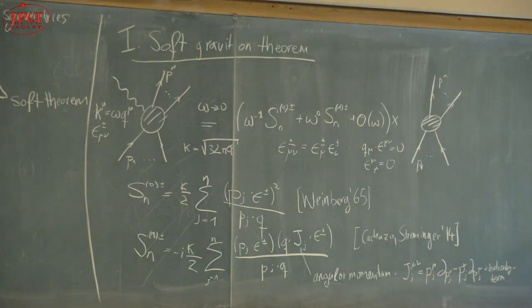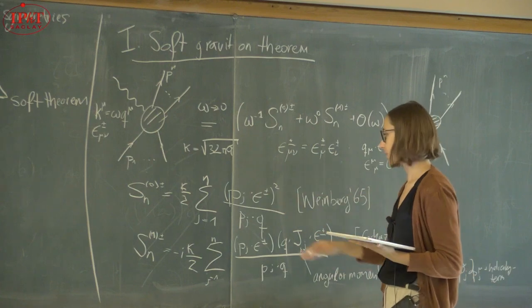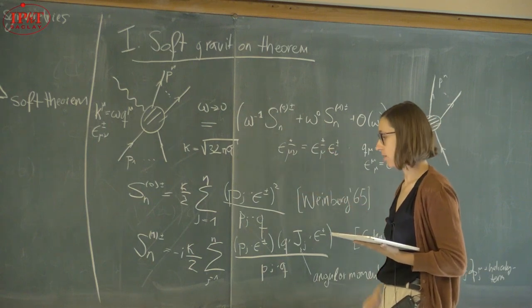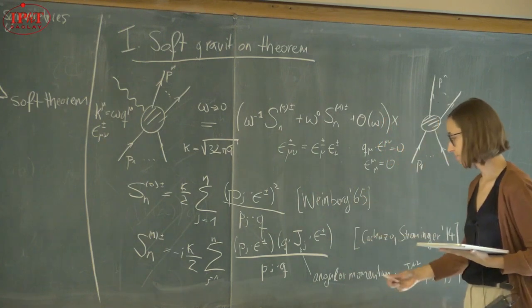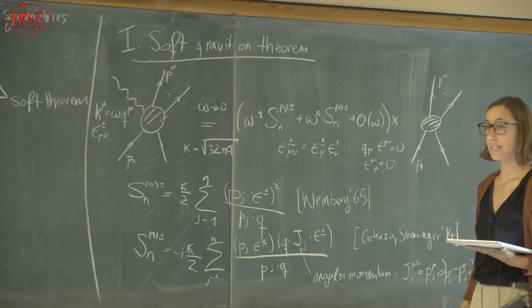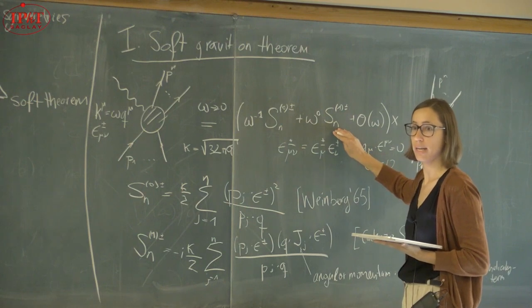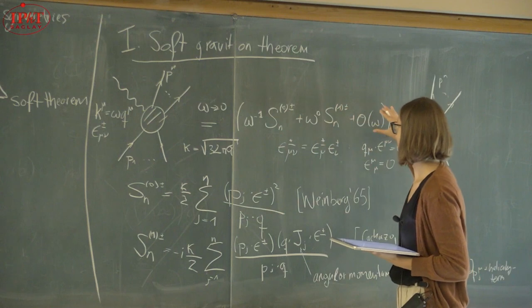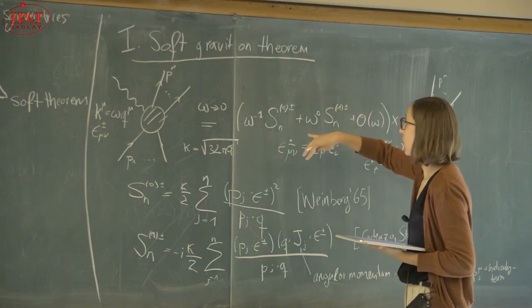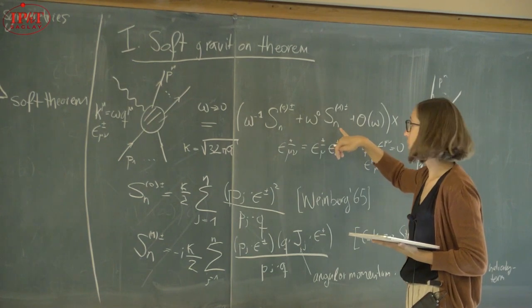Regarding how much these formulas are proven: the leading term S⁰ holds to all orders in perturbation theory — it is universal. The sub-leading term S¹ receives a one-loop correction but is one-loop exact, meaning there are no further corrections beyond one loop. There is also a sub-sub-leading soft graviton theorem known at tree level from the same Cachazo-Strominger paper, but its loop structure is less clear.